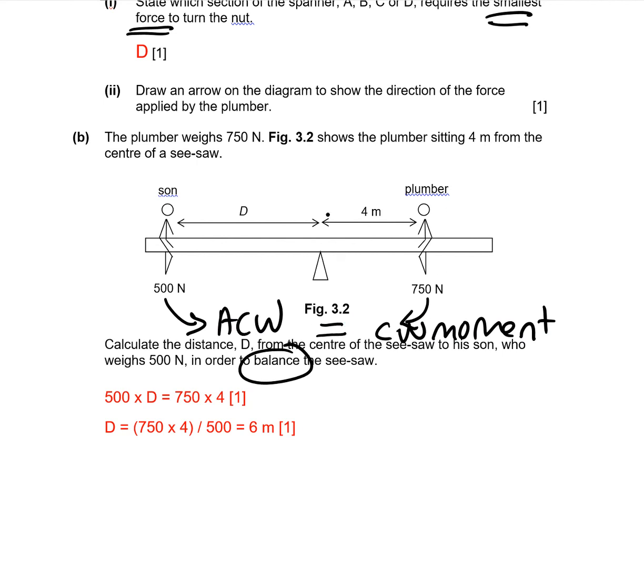The plumber's position has been fixed. So the force is 750, that's the weight of the plumber, times 4, which is the distance between the plumber and the pivot.